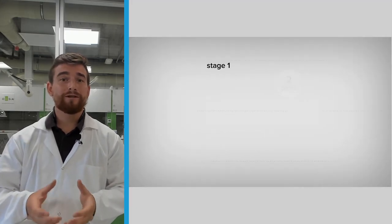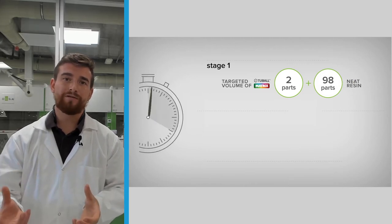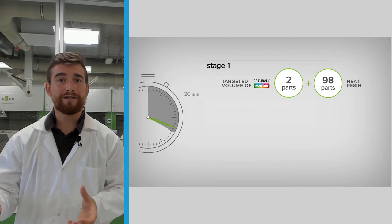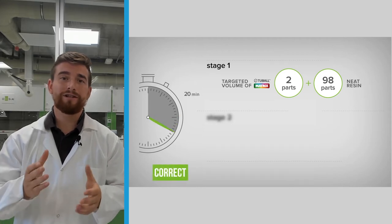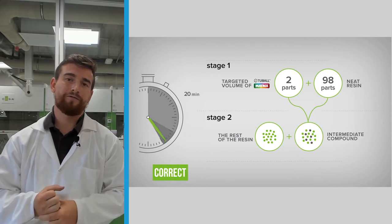We recommend using a two-step dilution process. In the first step we do a pre-mix with two weight percent of Tubal Matrix inside of your resin, and then dilute it down to the needed 0.1 to 0.5 weight percent of Tubal Matrix against the total formulation.